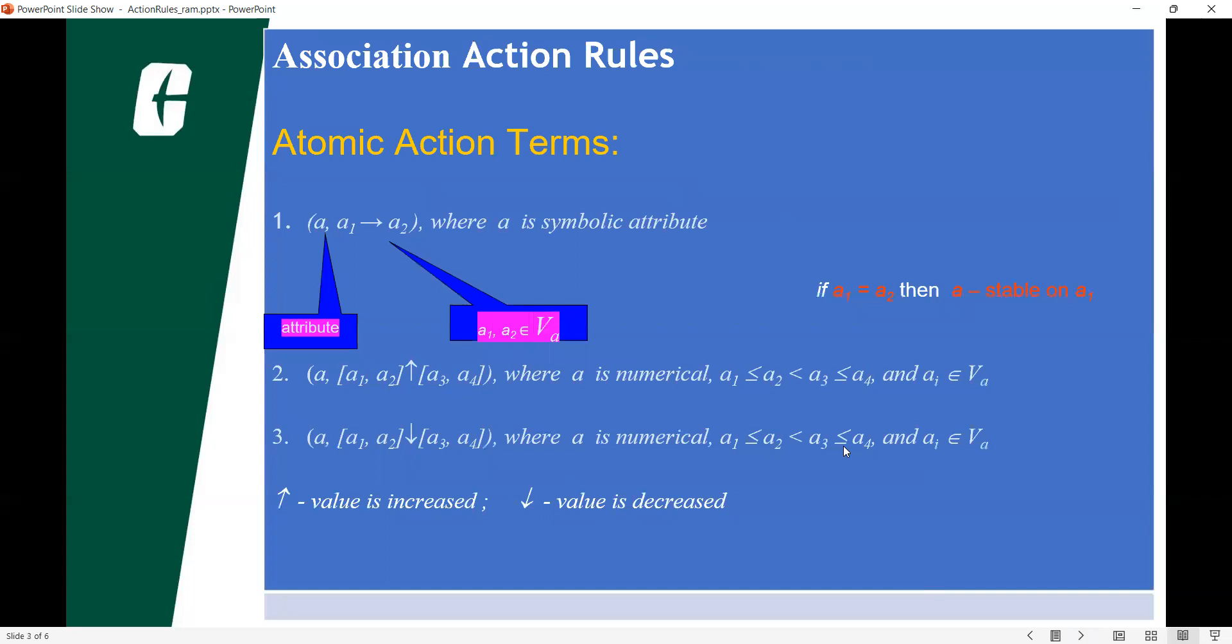Association action rules are hidden statements that help to show the probability of relationship between data items within large data sets in various types of databases.